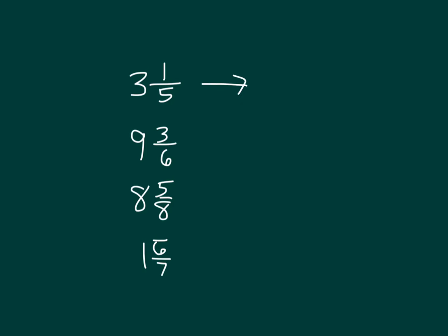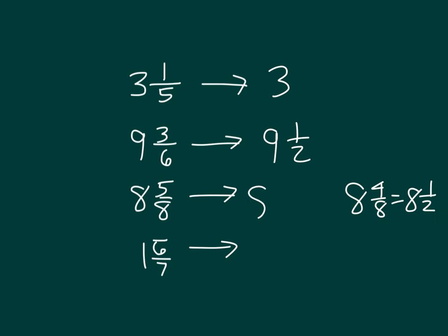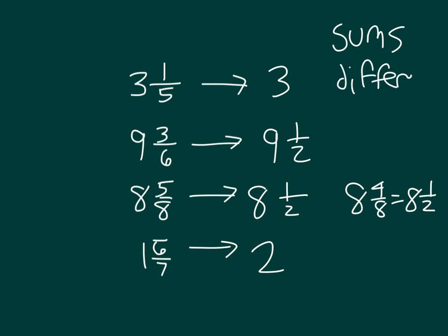One of the big keys is to estimate each number close to its benchmark fraction. Recognize that 3 and 1 fifth is only 1 fifth away from 3, so we estimate it as 3. 9 and 3 sixths is very close to 9 and 1 half. 8 and 5 eighths is close to 8 and 1 half — only 1 eighth more. And 1 and 6 sevenths is only 1 seventh away from 2. Knowing how to round these mixed numbers allows you to work with sums and differences when estimating, and understanding benchmark fractions really helps when finding these estimates.